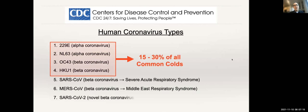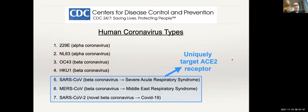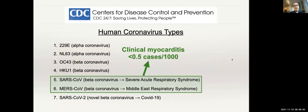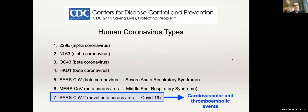Since then, additional novel coronaviruses have jumped from other species. The SARS virus in 2003 came from the bat through the civet cat to humans; MERS came through the dromedary camel. SARS-CoV-2's origin remains controversial. What's true of all is that, as a respiratory pathogen targeting the ACE2 receptor, we saw only about 0.5 cases per thousand of clinical myocarditis with SARS and MERS. SARS-CoV-2, however, shows a real propensity for cardiovascular and thromboembolic events.